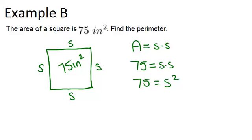So to figure out the length of the side, we're just going to square root both sides. So we get 5 root 3 equals S. So each of the 4 sides are length 5 root 3.